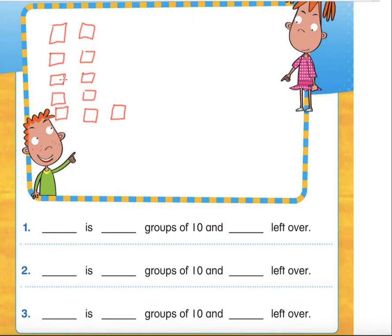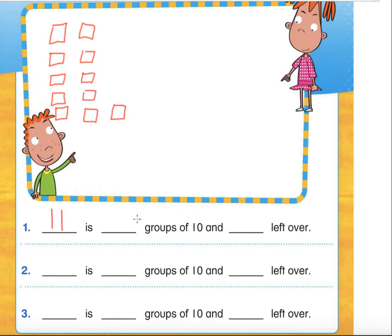First, we have to figure out how many blocks we have. You may draw them if you like, because we have to figure out how many blocks are in this box and write on the first line the total amount of blocks. So let's count: one, two, three, four, five, six, seven, eight, nine, ten, eleven. We have eleven blocks, so I'm going to write that down. But then they're asking us another question.